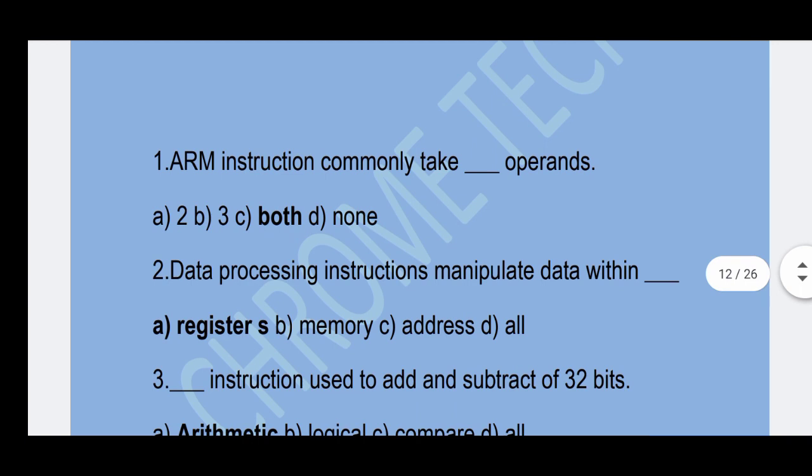First question: ARM instructions commonly take how many operands? Option C is the correct answer — both (referring to the number of operands).